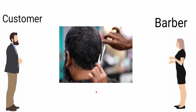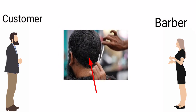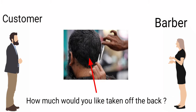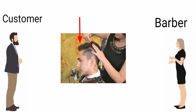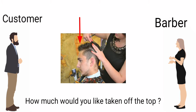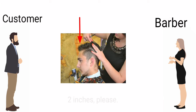You can say according to your wish: one inch, two inches, or three inches. This is the back — the backside. The barber may ask: 'How much would you like taken off the back?' You may say two inches or three inches. This is the top. The barber will ask: 'How much would you like taken off the top?' You can say, for instance, two inches.